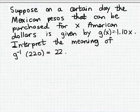The formula is g of x equals 1.10 times x. And we want to interpret the meaning of this expression: g inverse of 220 equals 22. So we want to interpret inverse function notation.